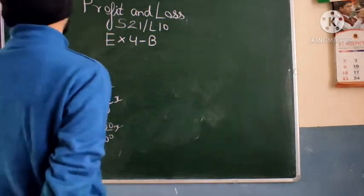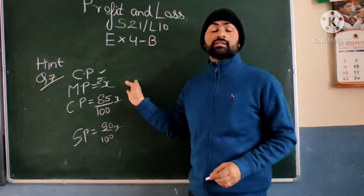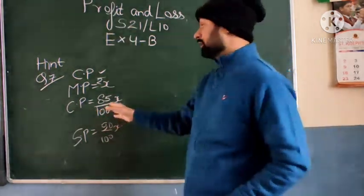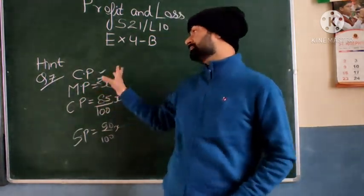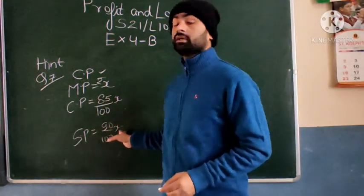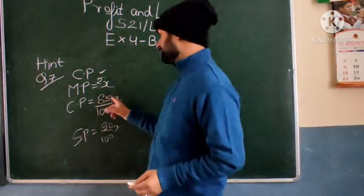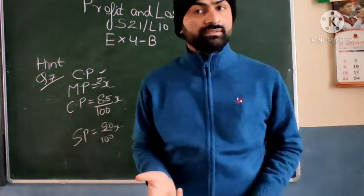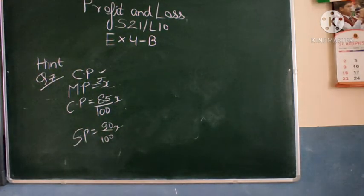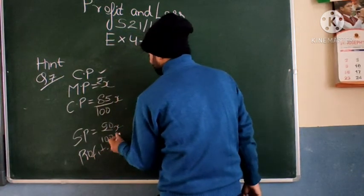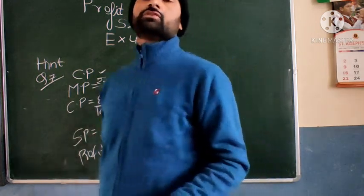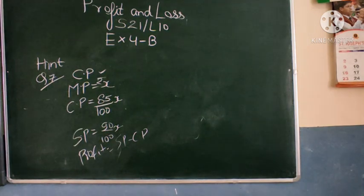Initially, assume mark price — let the mark price be X. The question says CP is 15 percent below, so CP is 85 percent of the mark price, giving CP in terms of X. You can equate with the given CP value of Rs. 3400 to get the value of X. Then discount is 10 percent on the mark price, so selling price is 90 percent of X. Once you get mark price, you calculate selling price. Then profit = SP minus CP, and profit percent = profit upon CP into 100. Try this — if you cannot solve, I will discuss it in the next lecture.